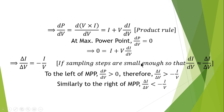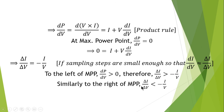This equation can be rearranged, and if the sampling steps are small enough, we can use the discrete approximation where dI/dV ≈ ΔI/ΔV for a smaller step size. To the left of the maximum power point, the derivative will be greater than zero, so ΔI/ΔV will be greater than −I/V. To the right of the maximum power point, ΔI/ΔV will be less than −I/V.